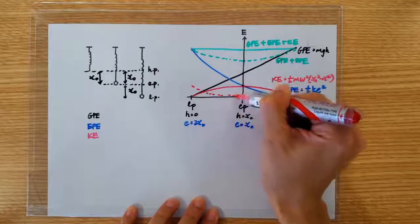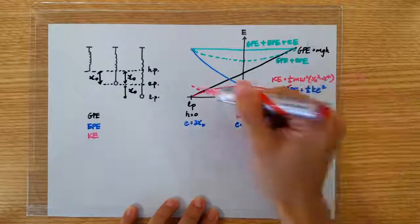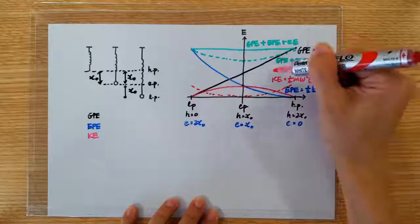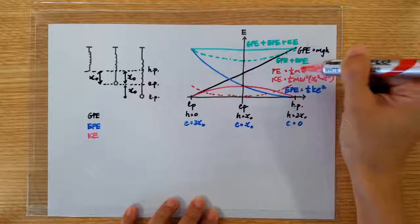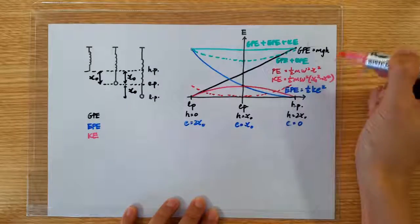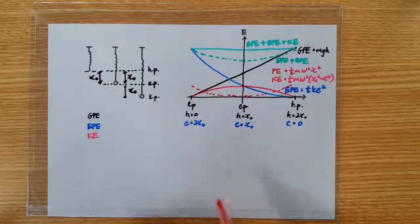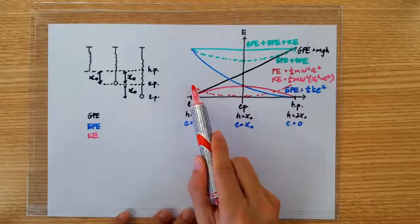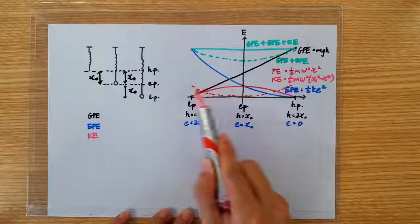This will result in this familiar U-shaped curve. And so that's the potential energy of the oscillation, which has the formula half m omega squared x squared. And likewise, the total energy of the oscillation should be a horizontal line at this level. That's all.